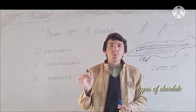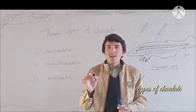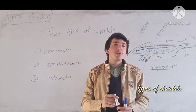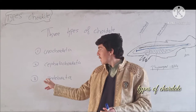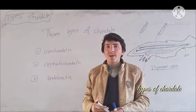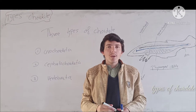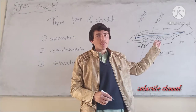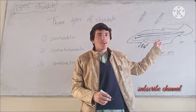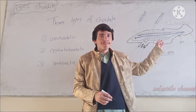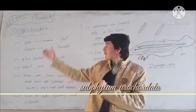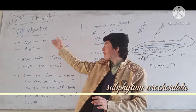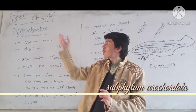One is Uro-coordinator, second is Cephalo-coordinator, and the last one is Vertebrata. This is the structure of the coordinates. I will discuss about the first type of coordinates.